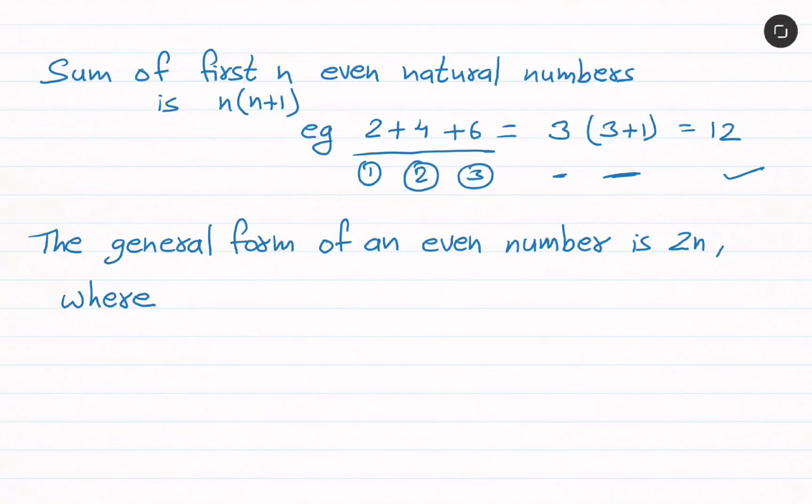That is 12. The general form of an even number is 2n, where n is a natural number.